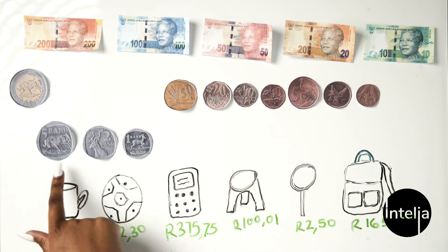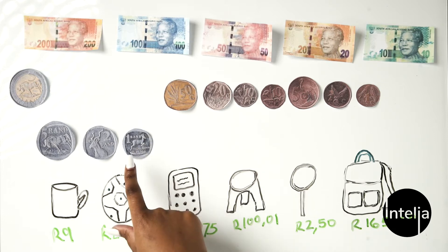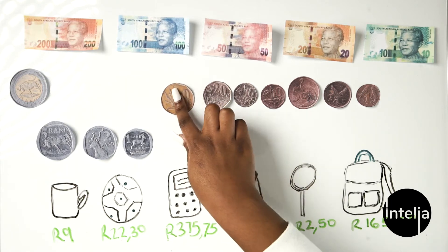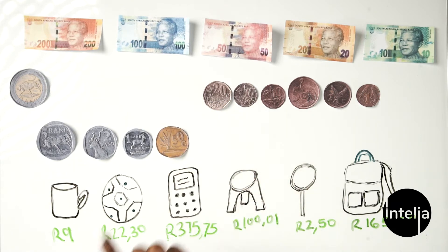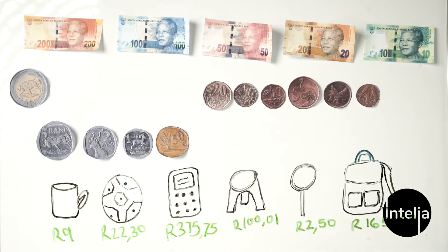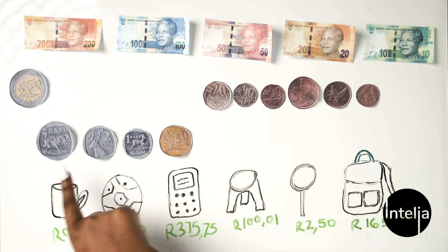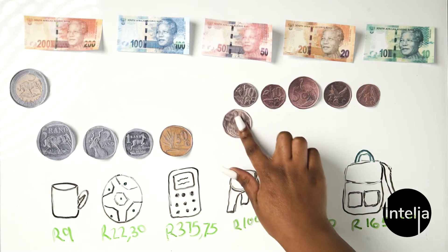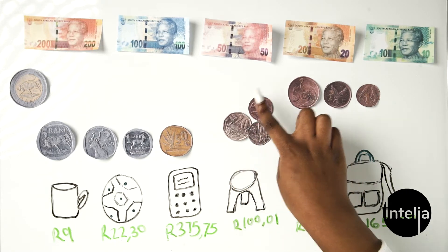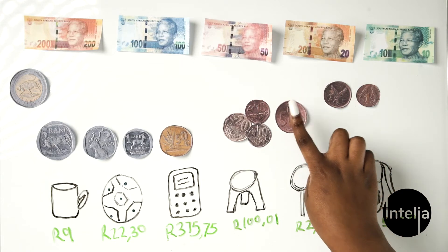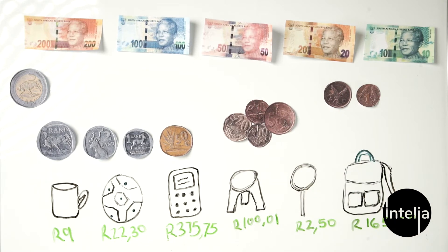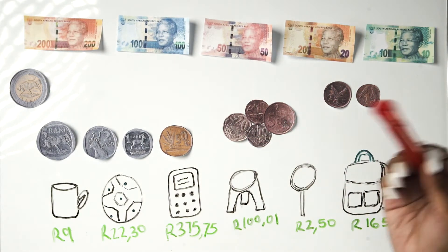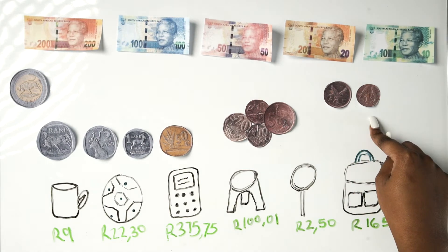Then you have 1 rand: 5 plus 2 plus 1 gives you 8 rand, and you want 9 rand. So you need an extra rand. You have 50 cents — that gives you 8 rand 50. Now you need another 50 cents. 20 plus 10 plus 10 cents plus 5 cents gives you 45 cents, so you need an extra 5 cents, which you don't have. You only have 3 cents.